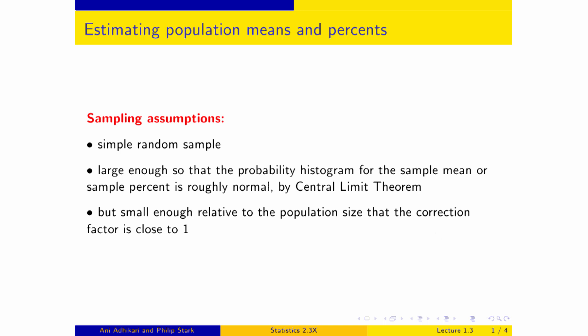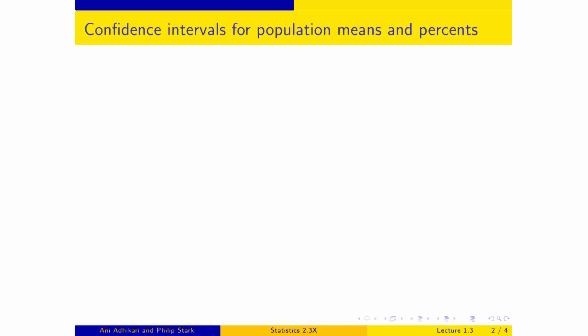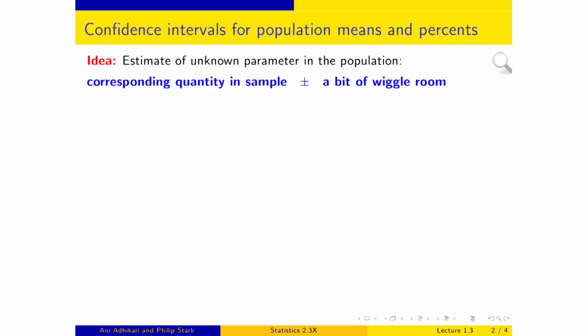That's the typical situation in statistics. We're going to try estimating the parameter — that is, the population mean or a population percent — by an interval. Why an interval? Because the basic idea is you've got a number that is unknown that you're trying to estimate. So you start out with what you see in the sample and then you give yourself a bit of room in both directions: estimate plus or minus wiggle room. That's the standard way of making an interval estimate for a parameter.